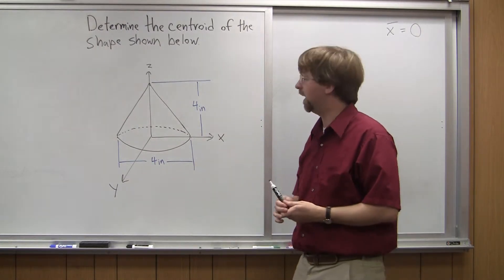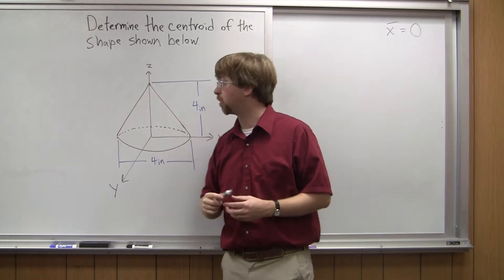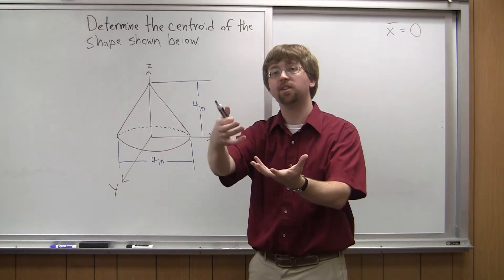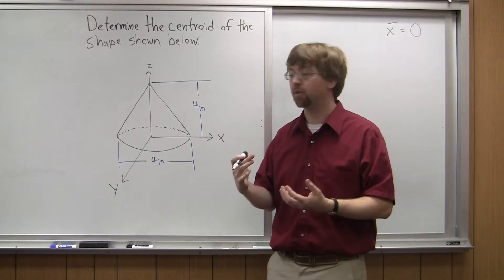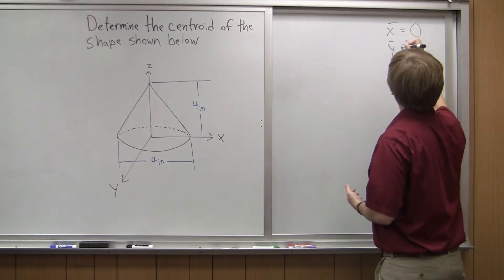And I can do the same thing for y. So y is coming out of the board or back into the board, and if I look at this cone, the front half of this cone is going to be a mirror image of the back half of the cone. So when that's true, I know that my y-bar value is equal to zero.